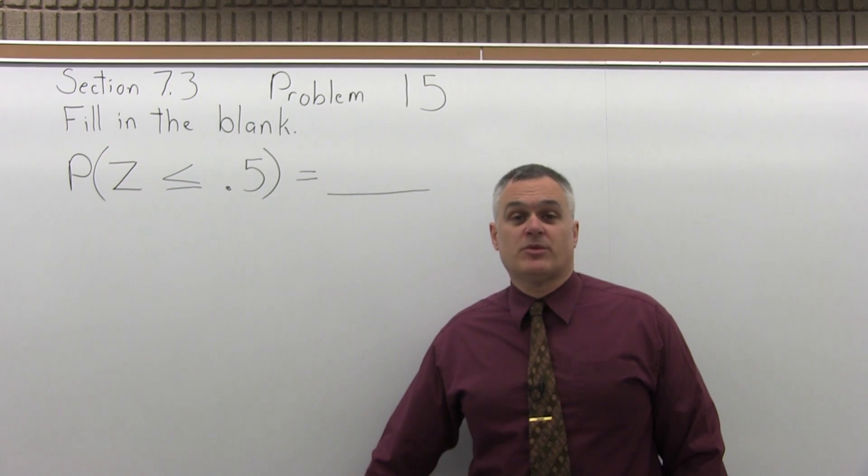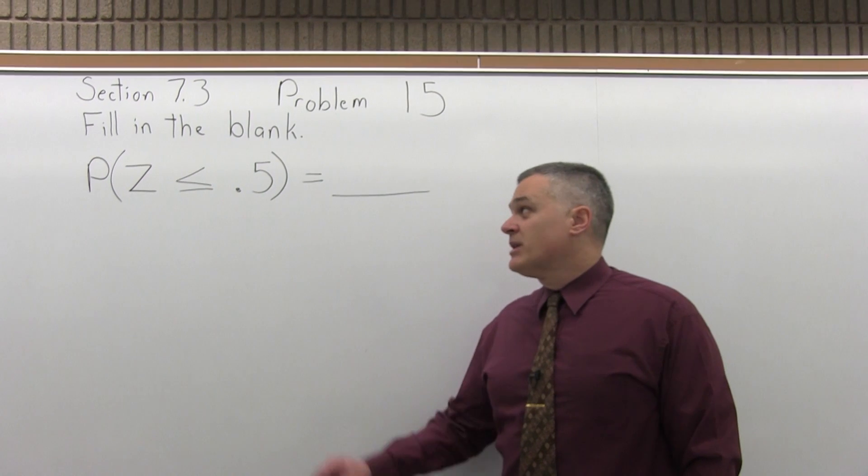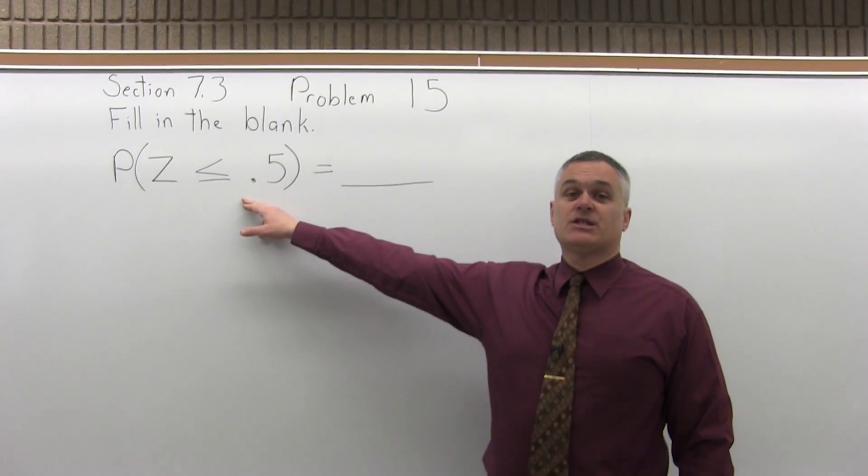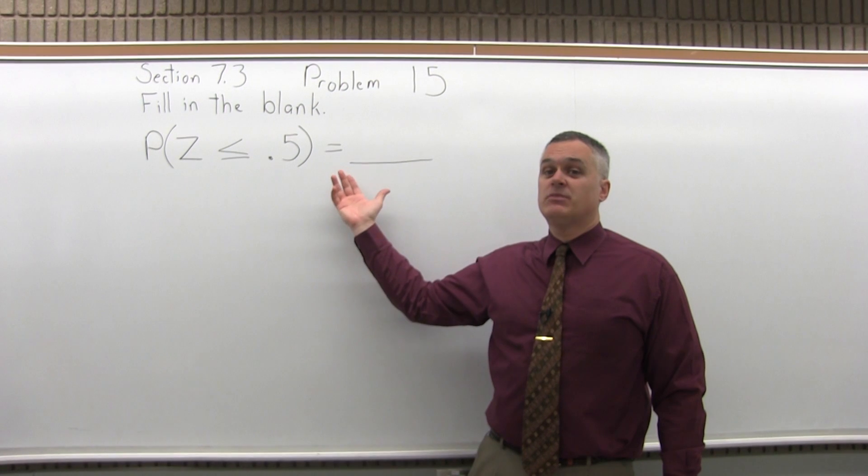This is Section 7.3, Problem number 15. It says, fill in the blank, the probability that Z is less than or equal to .5 equals blank.